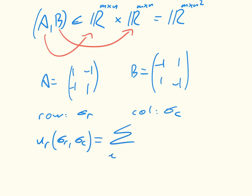the utility to the row player of sigma R, sigma C is going to be equal to the sum of all the rows, of which we know there are M of them, and the sum of all the columns, of which we know there are N of them, multiplied by the value in each of those rows and columns, multiplied by the probability with which we are there. So sigma R I times sigma C J.